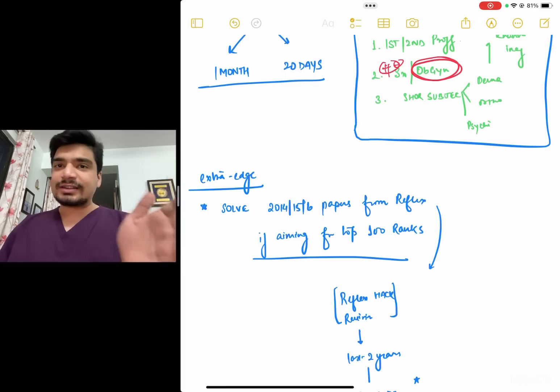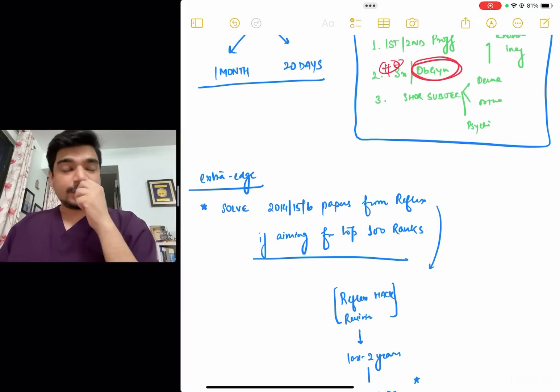So those two, three papers, 14, 15, 16, unfortunately, they're not given in any other platform. So you can just buy Reflex for the 600 rupees and that will give you an extra edge. I'll give the link to buy Reflex for getting those particular papers.